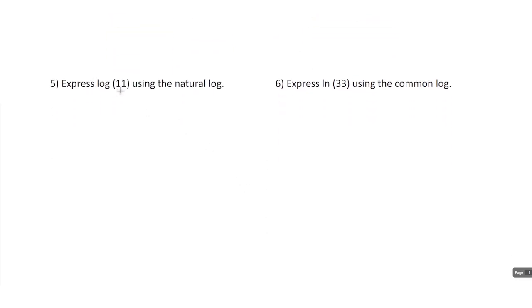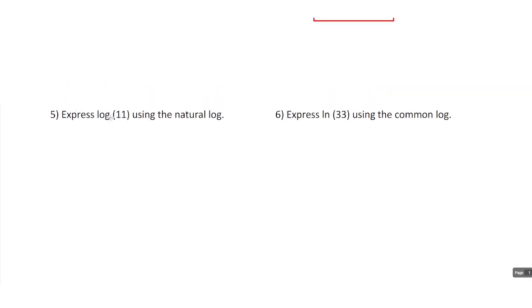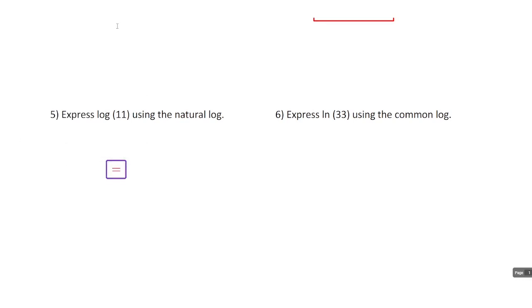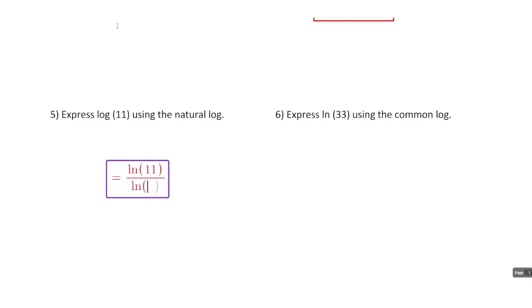Number 5 says express log of 11 using the natural log. So we're going to use both the common log and the natural log in this problem. This would be ln of 11 — the natural log of 11, or log base e of 11 — divided by log base e, or the natural log of 10. That 10 is coming from the base of the original function; when it's not written we assume it to be 10.